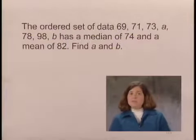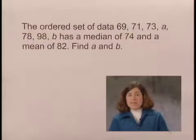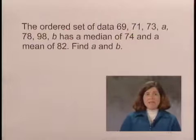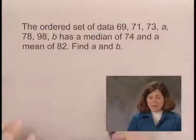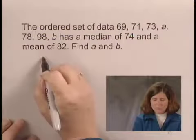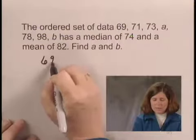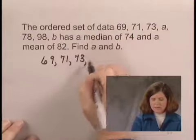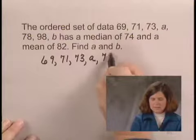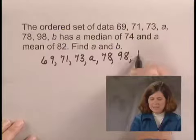Although this problem looks difficult, it really is just an application of the definitions of median and mean. Let's start by writing the data out in one row. It's already in order, which means it's in order from smallest to largest: 69, 71, 73, a, 78, 98, b.